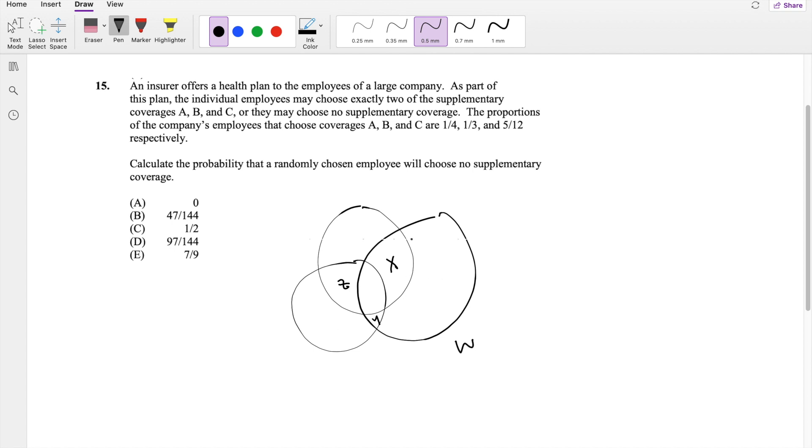But they can't pick this one because this is just one, this is just one, and this is all three. And they have to pick exactly two or none.